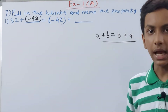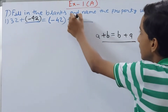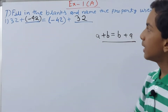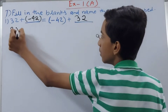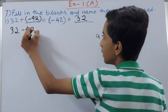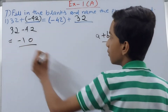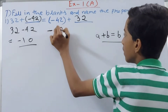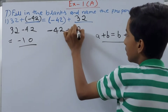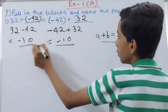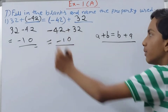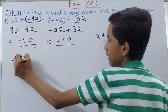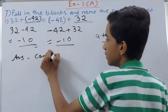Let us verify this. On the left side: 32 + (−42) = −10. On the right side: (−42) + 32 = −10 as well. Both sides are equal, so the answer is verified. The blank is filled with (−42) and 32, and the property used here is the commutative property.